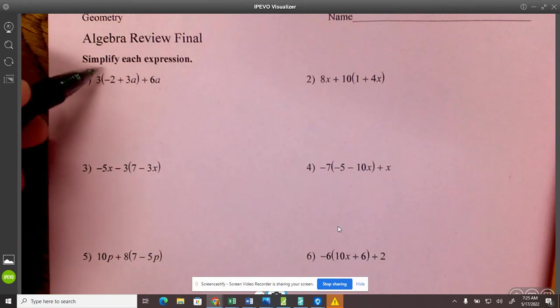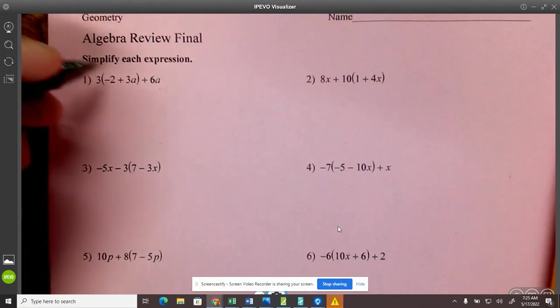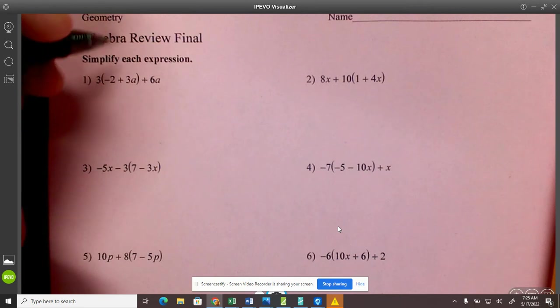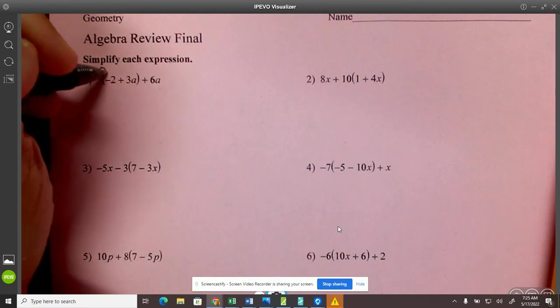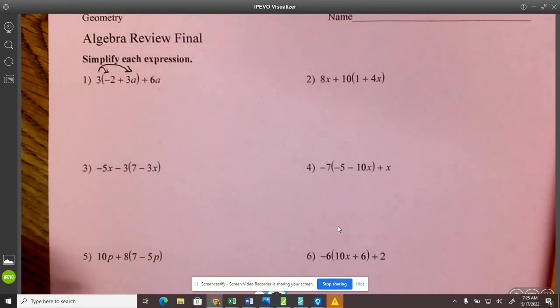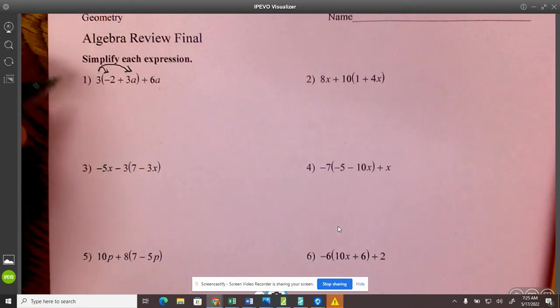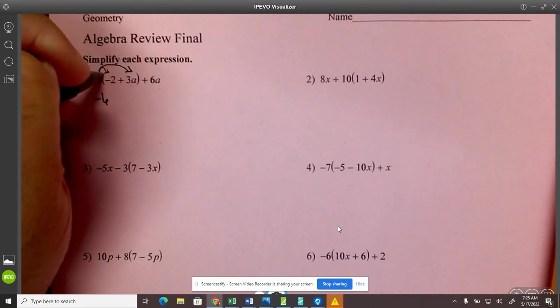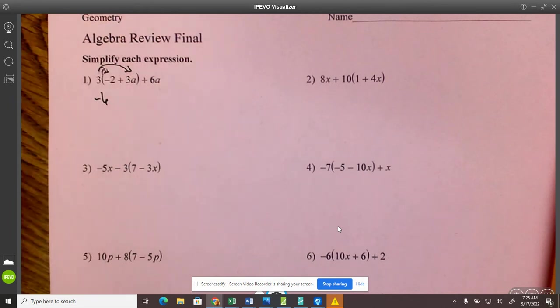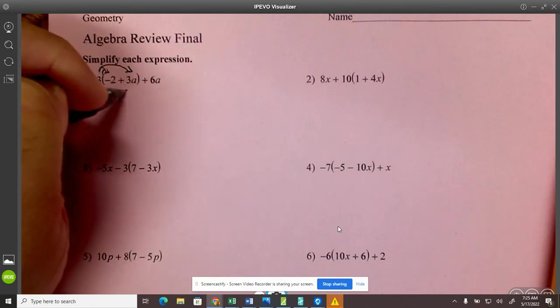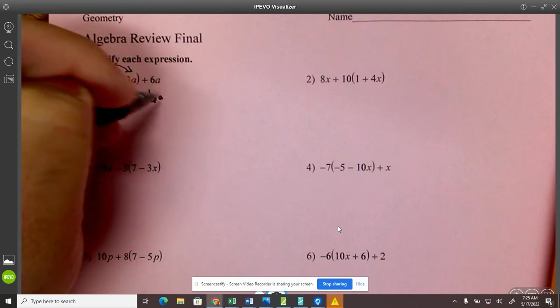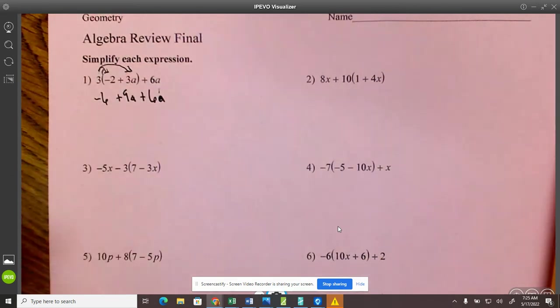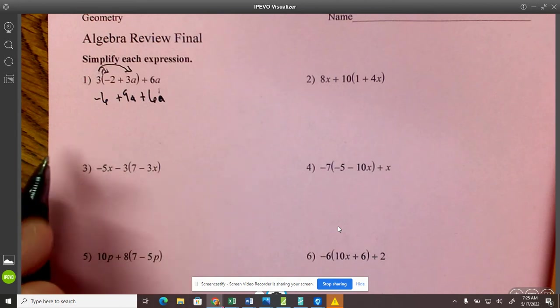Now, when you see parentheses and a number outside, that's a distribution problem. So you're going to multiply that number on the outside to everything in the inside. And it's okay to use a calculator if you don't know what it is. But it says 3 times negative 2, negative 6, 3 times positive 3a, plus 9a, and then plus 6a, this right here.